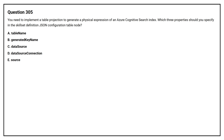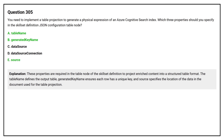The correct answers are Option A: Table name, Option B: Generated key name, and Option E: Source. These properties are required in the table node of the skillset definition to project enriched content into a structured table format. The table name defines the output table, generated key name ensures each row has a unique key, and source specifies the location of the data in the document used for the table projection.